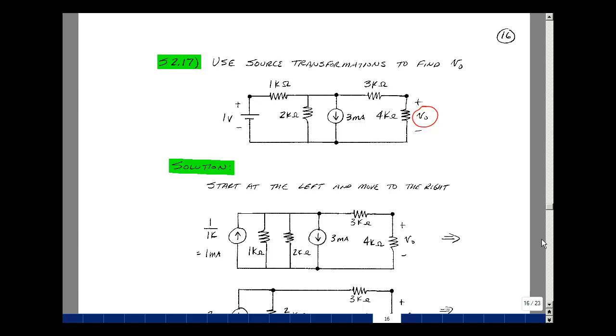So let's start at the left-hand side and work our way to the right and see if we can simplify this circuit. Here I've got a voltage source in series with a resistance. I can transform that into a parallel current source and parallel resistance between these two nodes.